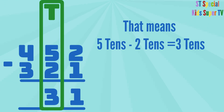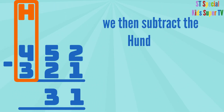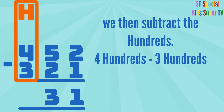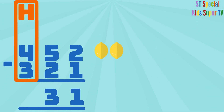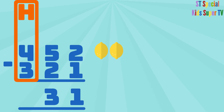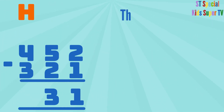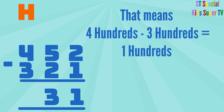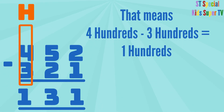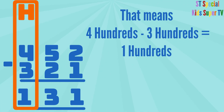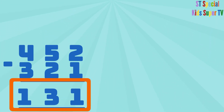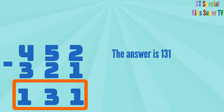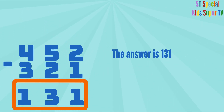So you write the 3 under the 10s column. We then subtract the 100s: 4 hundreds minus 3 hundreds. 1, 2, 3, 4 lemons minus 1, 2, 3 lemons equals 1 lemon. That means 4 hundreds minus 3 hundreds equals 1 hundred. So you write the 1 under the hundreds column. Therefore, 452 minus 321 equals 131. So the answer to our subtraction problem is 131.